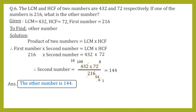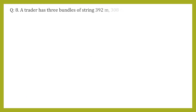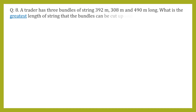We can highlight the final answer. Question number 7 is homework, so you can do it yourself. Now let's go on with question number 8. Let's read the question: a trader has three bundles of string.